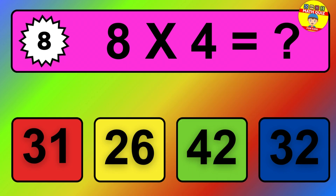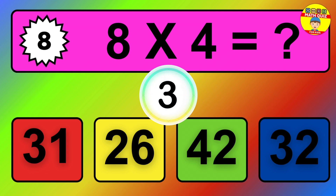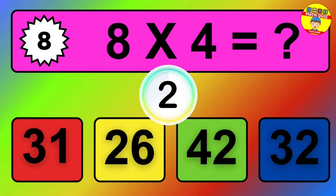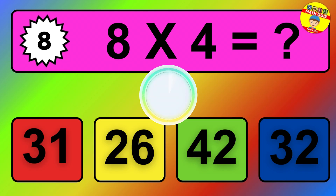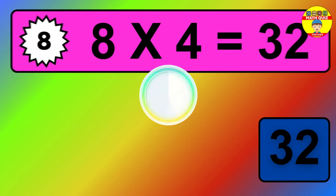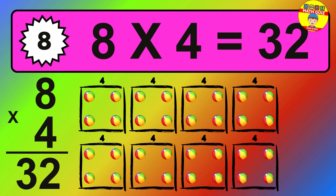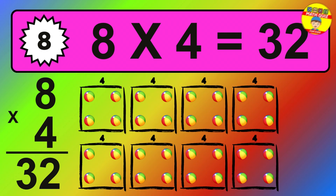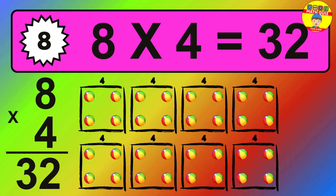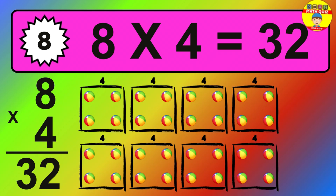Question eight: eight times four equals what? The answer is: eight times four is thirty-two. To calculate, we have eight groups with four balls each one. So how many balls do we have? Thirty-two balls.